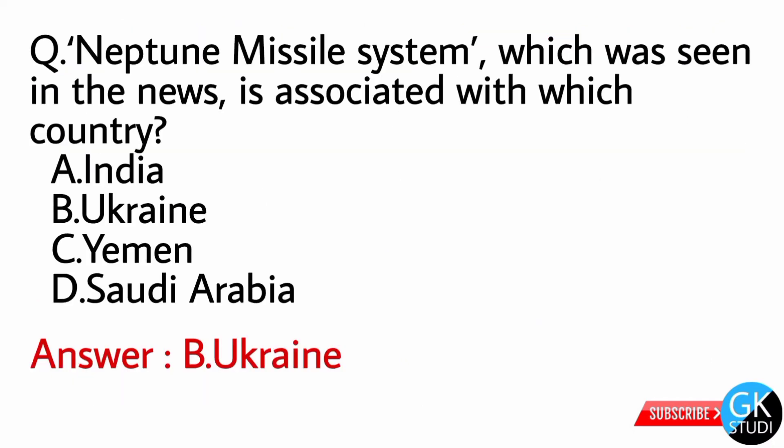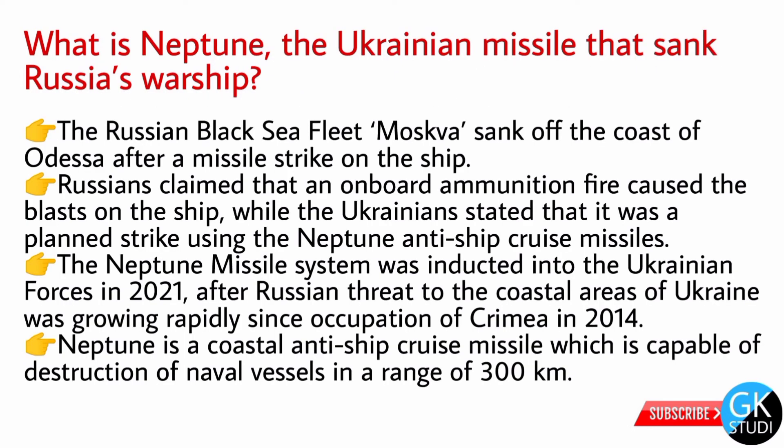Next question: the Neptune missile system, which was seen in the news recently, is associated with which country? The answer is option B — Ukraine. In the Black Sea, the fleet ship Moskva sank off the coast of Odessa after a missile strike. Residents claimed an onboard ammunition fire caused by the blast, while Ukrainians stated it was a planned strike using the Neptune anti-ship cruise missiles.